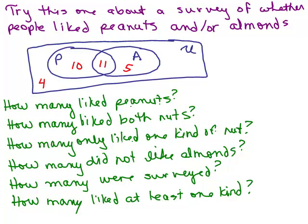How many liked peanuts? We look at the peanut circle — there are two numbers in there, the 10 and the 11. So 10 plus 11 is 21. How many liked both nuts? That would be the intersection — people who liked both peanuts and almonds right here in the center — that's 11 people. How many only liked one kind of nut? The 11 in the middle don't get counted, so we only want the 10 who liked peanuts only plus the 5 who only liked almonds: 10 plus 5 is 15.